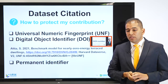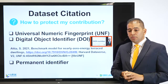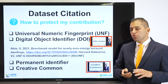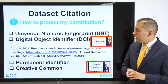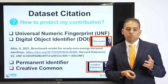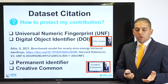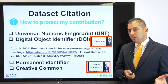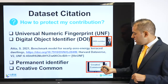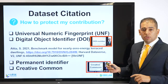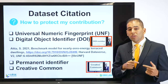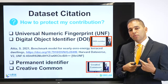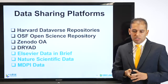The advantage of having this universal numeric footprint is that you will have a permanent identifier. You can also define the Creative Commons rights that you want to have while sharing the data. I advise you to watch the video about Creative Commons, because I explain what kind of rights you can allow others to have while exploring or using your dataset.